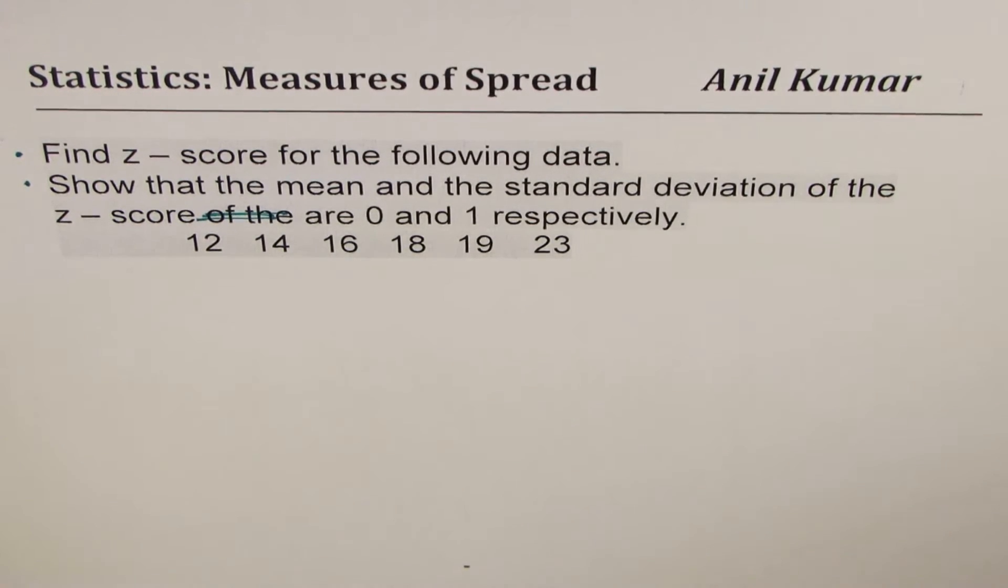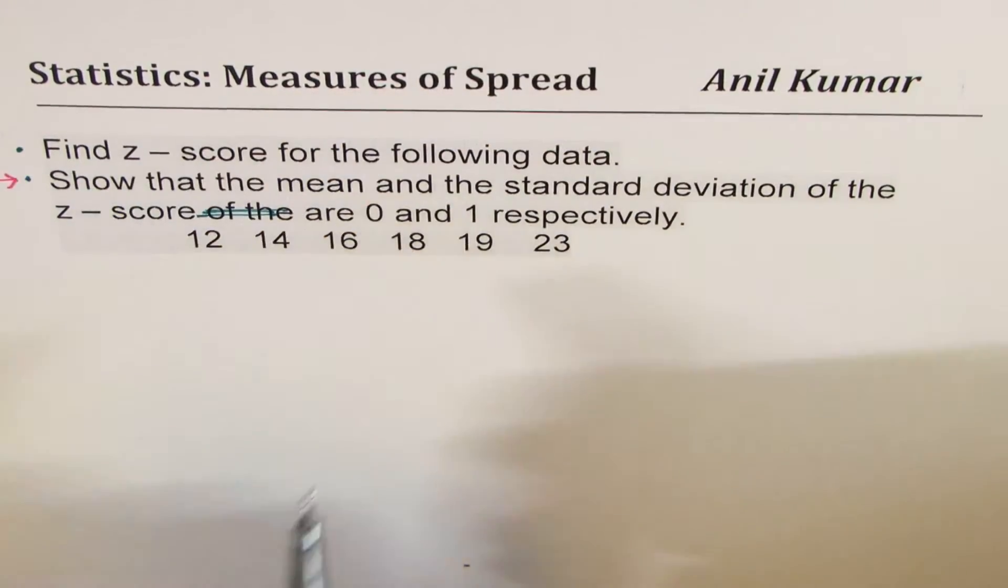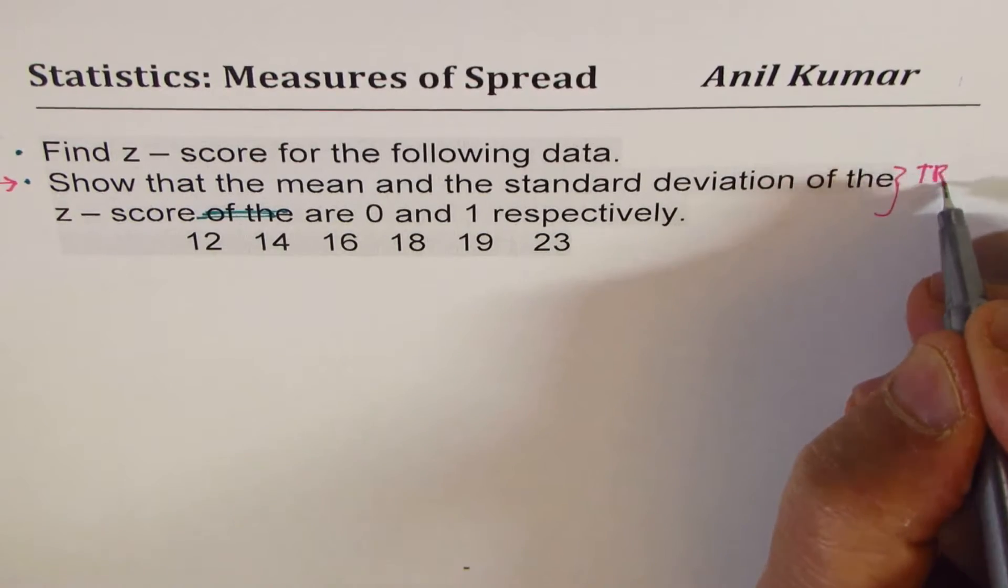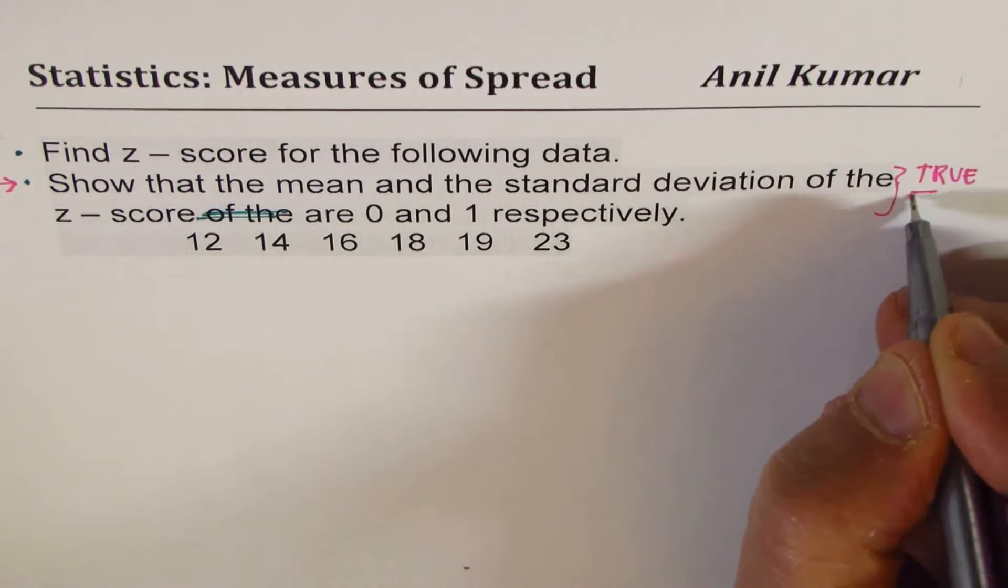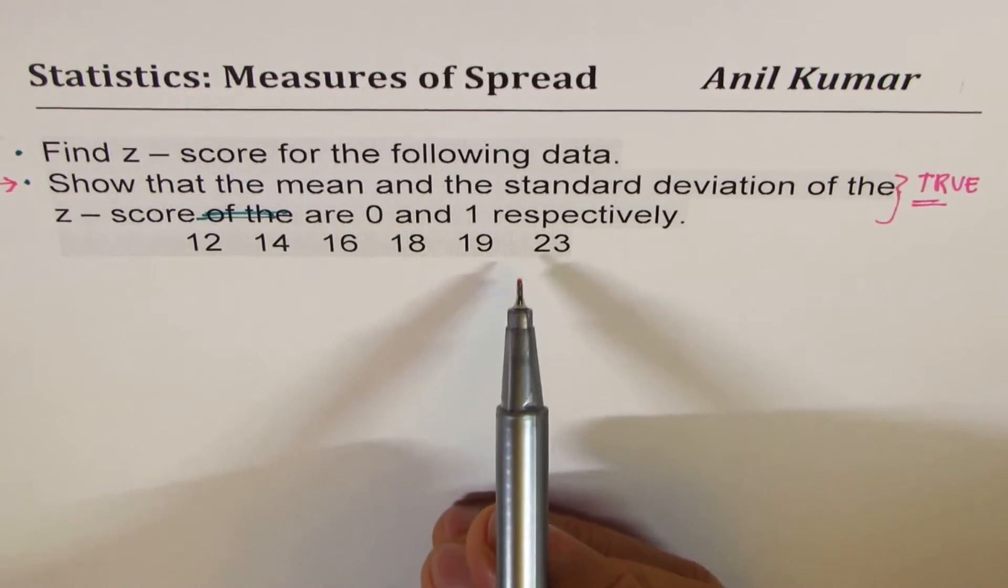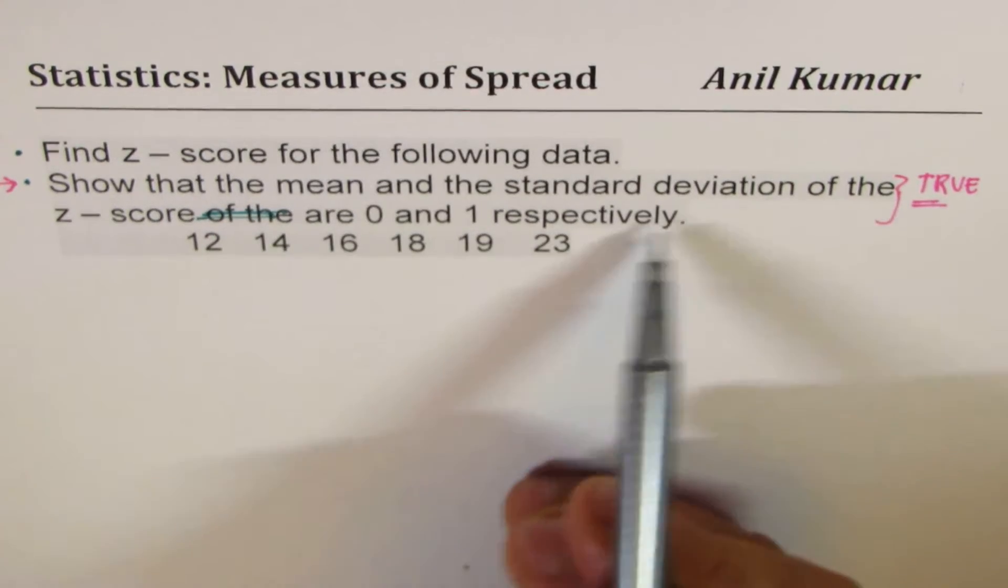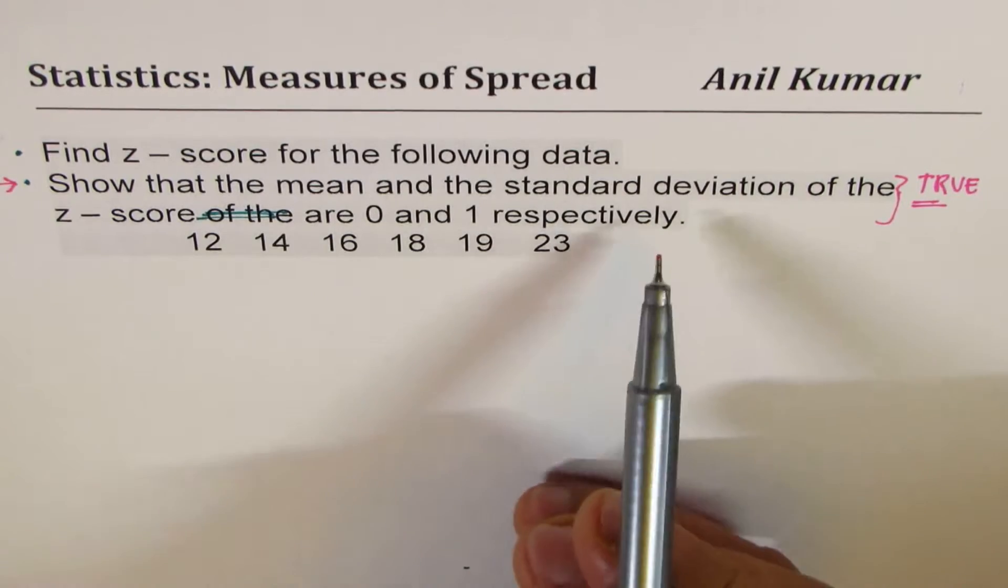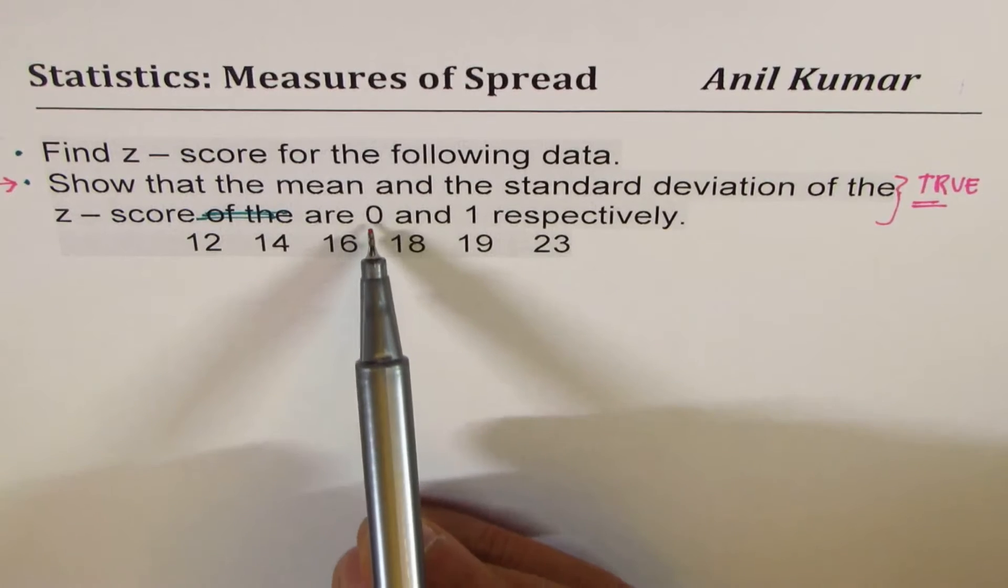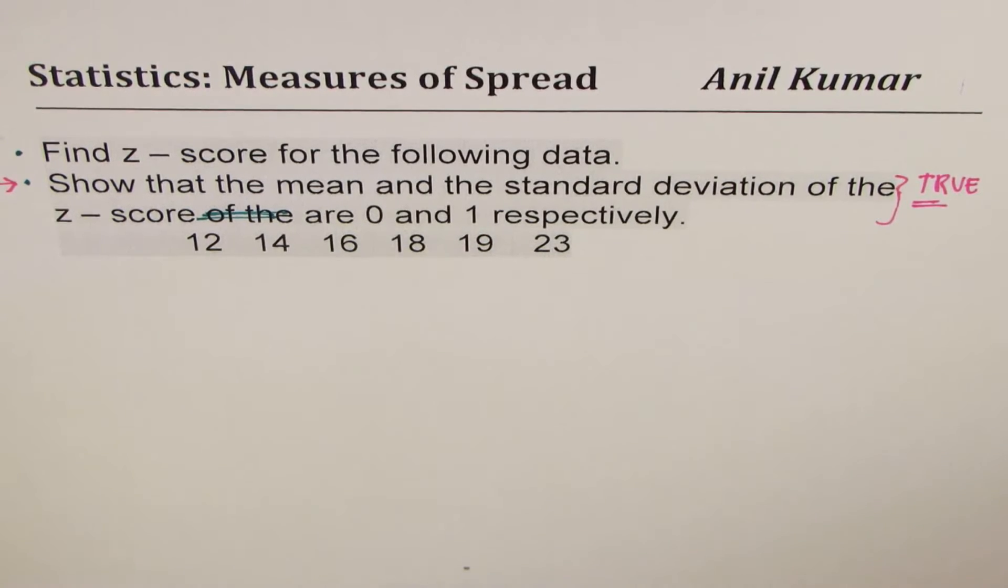Now, part 2 is true for all the z-scores. So this is actually true in most cases. So we'll show from calculations that it is true here also. If you get that kind of thing in a multiple choice question, you should remember that mean and standard deviation of the z-scores is 0 and 1 respectively.